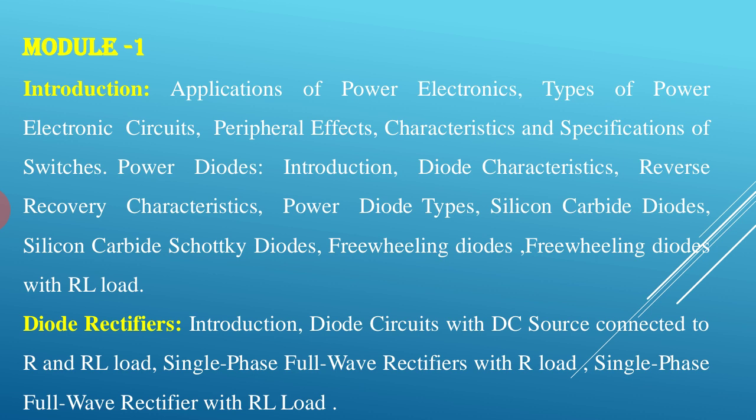The different types of circuits include AC to DC, DC to AC, fixed AC to variable AC, and fixed DC to variable DC — also called a chopper or DC-to-DC converter. Under Module 1 we also study diodes such as silicon carbide diodes, Schottky diodes, and freewheeling diodes. The diode rectifier section covers diode circuits with DC source connected to R and RL loads.